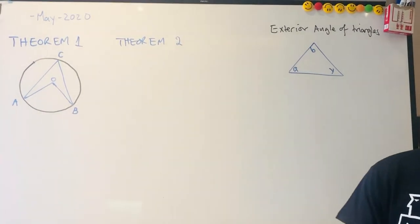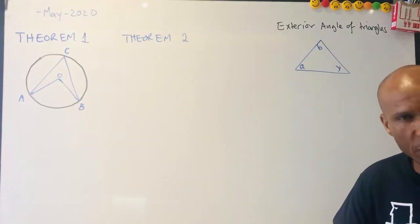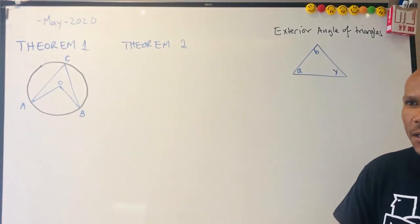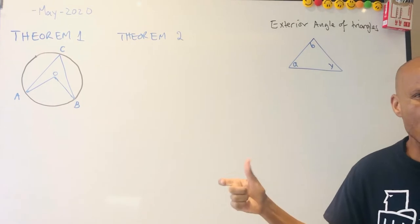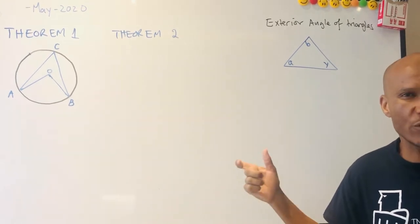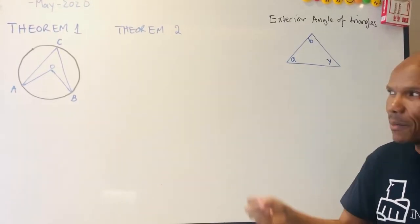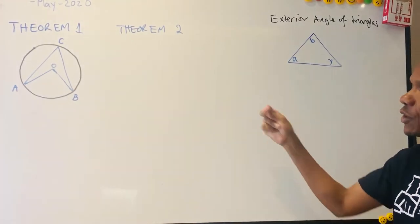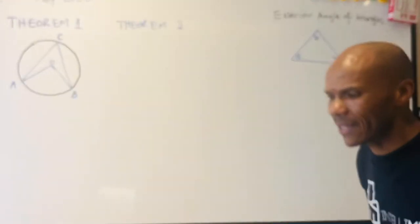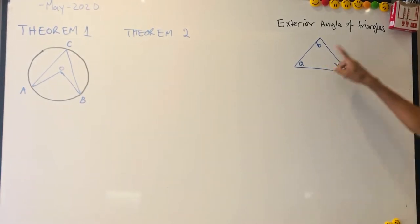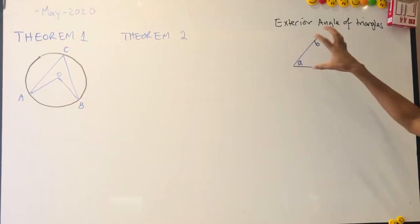We are continuing with circle theorems, but now we are going to talk about Theorem 1 and Theorem 2. What we've been talking about before were properties, but now we're talking about theorems. Before we get there, I just want us to cover this concept first.